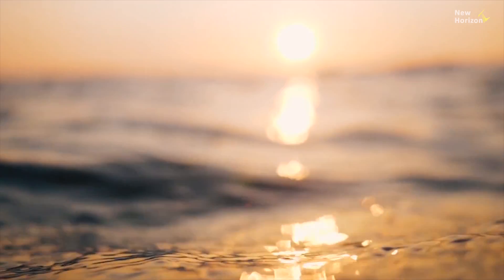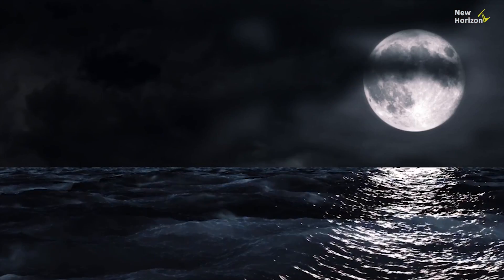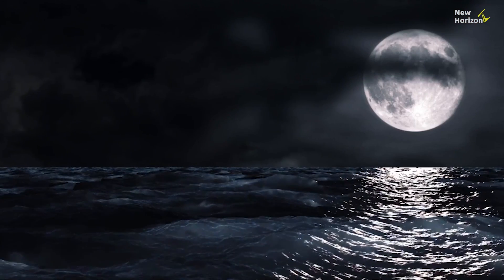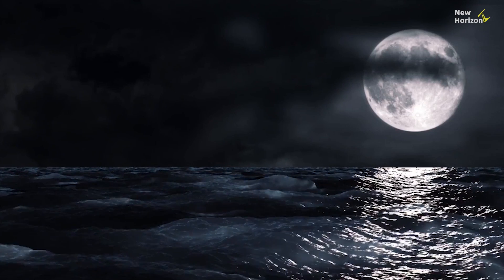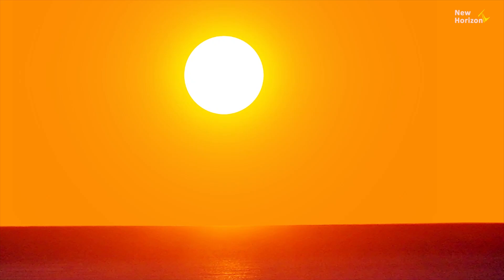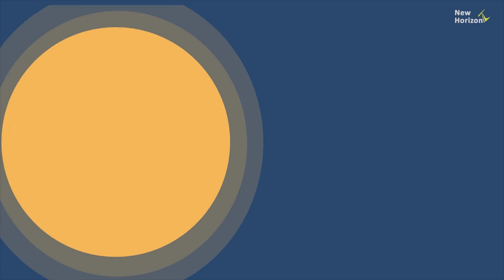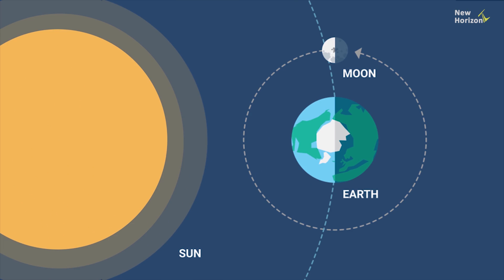In reality, the Sun also causes tidal waves on Earth, but the influence of the tidal waves caused by the moon is greater than that of the Sun. This is a strong indication that the Sun is much farther away from us than the moon.